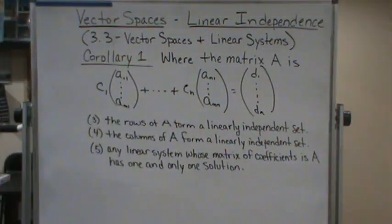So we have this system here. What I was saying is that from four to five, four says the columns of A form a linearly independent set, and five says any linear system whose matrix of coefficients is A has one and only one solution.